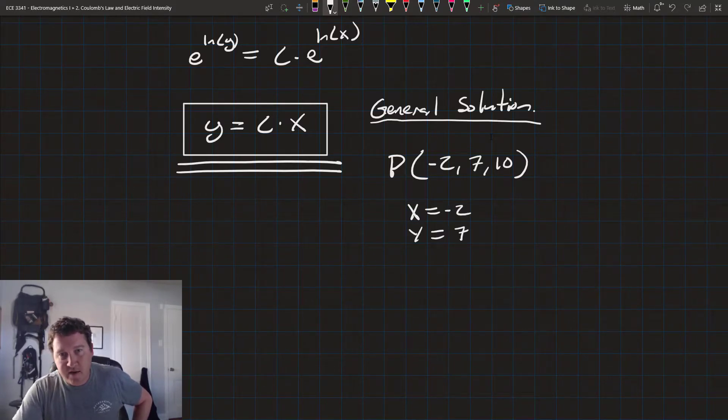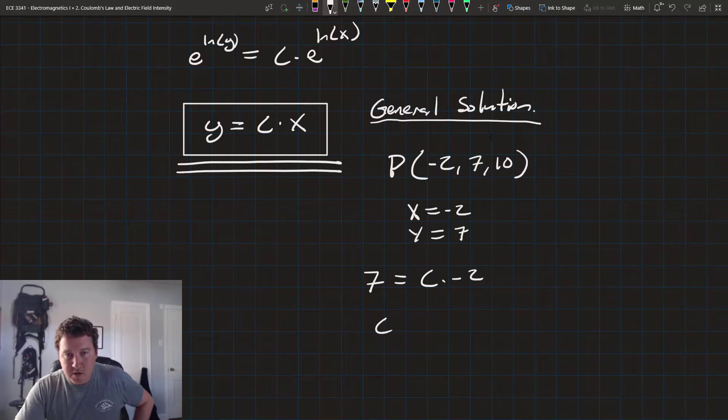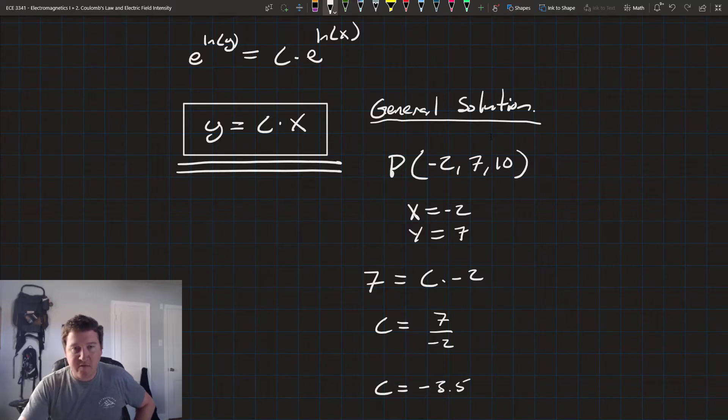So, we have 7 equals c times negative 2. So, c equals 7 over negative 2, which gives us c equals negative 3.5.